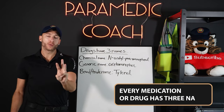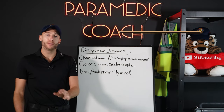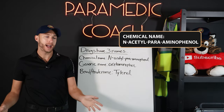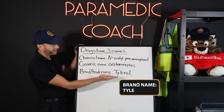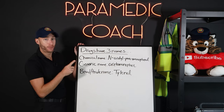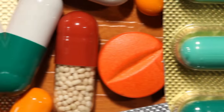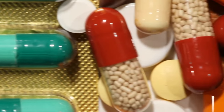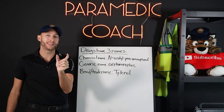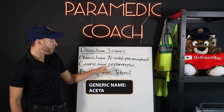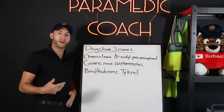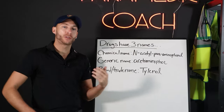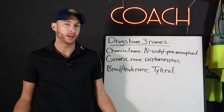Every medication or drug has three names. The chemical name, which we're never really going to see after the lab. The generic name — we're going to see a lot with our patients on their med list and on their pill bottles. So generic name: acetaminophen. The brand or trade name: that's Tylenol. The patient may be familiar with either the generic or the brand name when you speak with them.